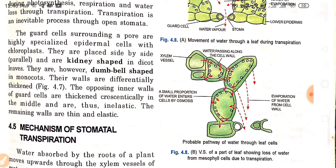Guard cells are placed side by side in parallel and are kidney-shaped in dicot leaves. They are dumbbell-shaped in monocots. In further classes you will read about dicots and monocots in detail, where you will see that kidney-shaped guard cells are found in dicots and dumbbell-shaped ones in monocots.